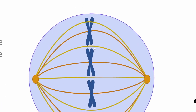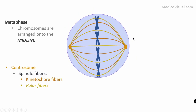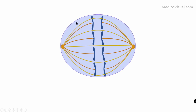What happens next? The kinetochore fibers shorten in length, and when they shorten they pull the chromatids away from each other at the kinetochore. Meanwhile, the non-kinetochore polar fibers lengthen and elongate, causing the cell to also elongate. So kinetochore fibers shorten, pulling chromatids apart, while non-kinetochore fibers lengthen, elongating the cell.